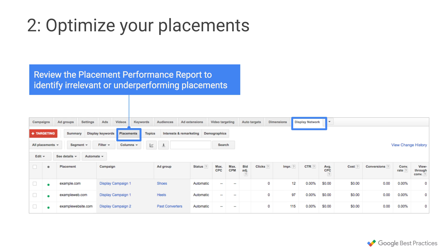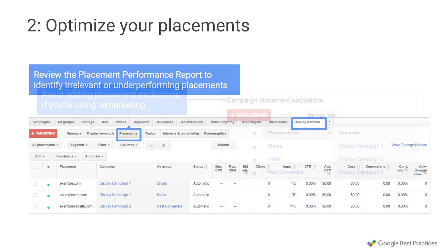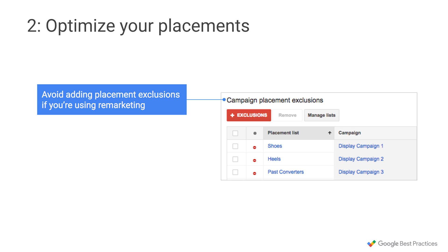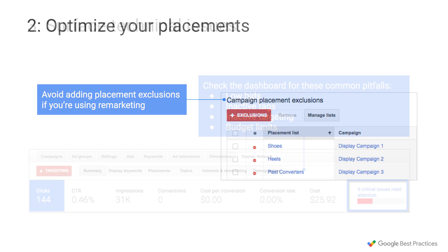Second, you'll want to review your placement performance report to identify irrelevant or underperforming placements. Look for placements that are off-brand or are consuming budget but not driving any conversions. If you're using remarketing, avoid adding placement exclusions — if someone's expressed interest in your business, you want to have as few constraints as possible.